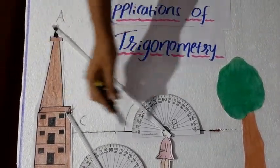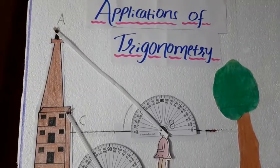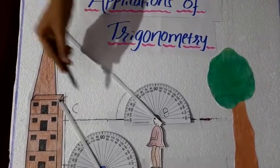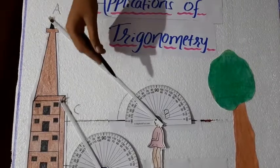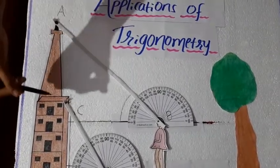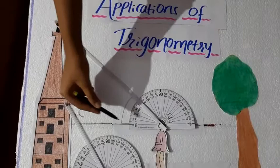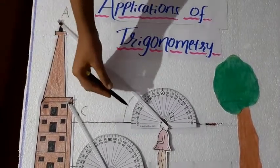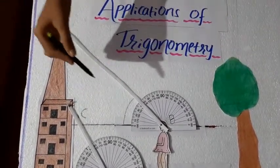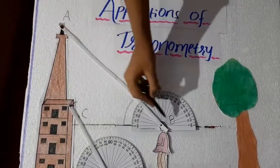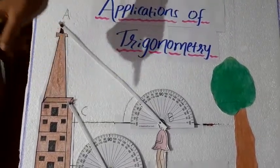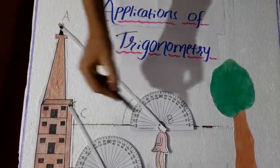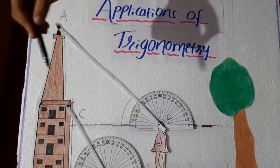Now, tan of 45 degree equal to 10 meters divided by adjacent side. That is BC here. So, we'll get as adjacent side equal to opposite side divided by tan 45 degree. That is 10 divided by 1 by which we get 10 meters. So, BC that is adjacent side or the base or the width of the river is 10 meters.